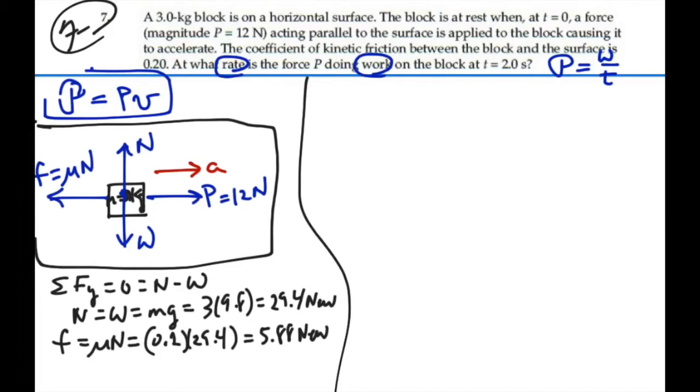Let's figure out the acceleration, so that we can figure out our velocity at t equal to 2 seconds. So looking at the summation of the forces in the x direction, that should equal ma, and that should equal the net force in the direction of positive acceleration. And that's going to be equal to p minus the frictional force.